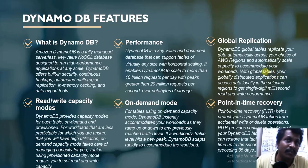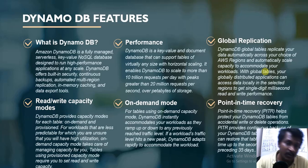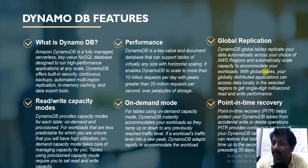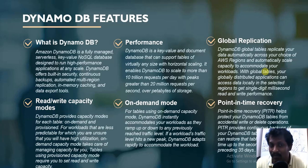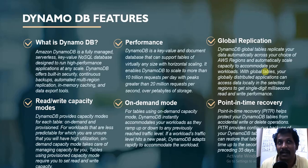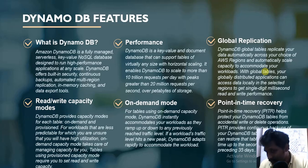DynamoDB has two capacity modes: provisioned read/write capacity mode and on-demand mode. For workloads that are less predictable, you can use the provisioned read/write capacity mode. If a table requires very high performance reads and writes, go with on-demand mode. You can define the capacity mode per table, allowing you to ramp traffic up or down on each table based on expected peak traffic — a really useful architectural decision-making feature.